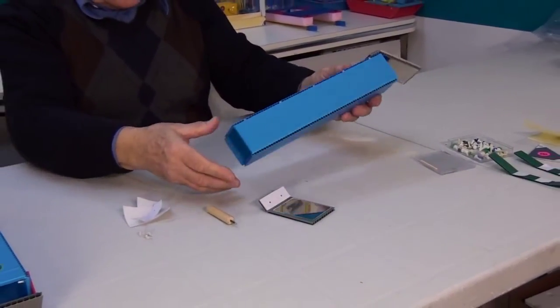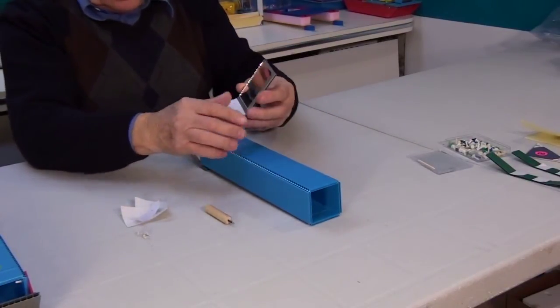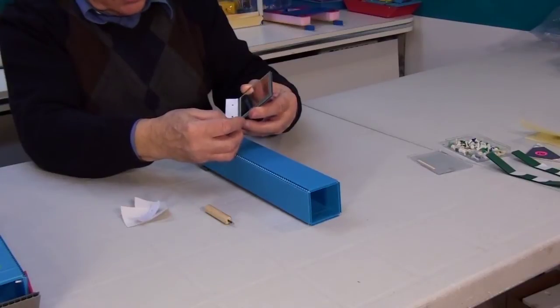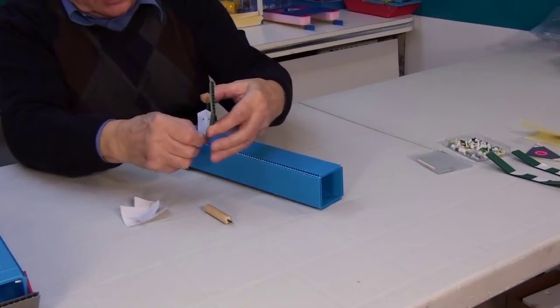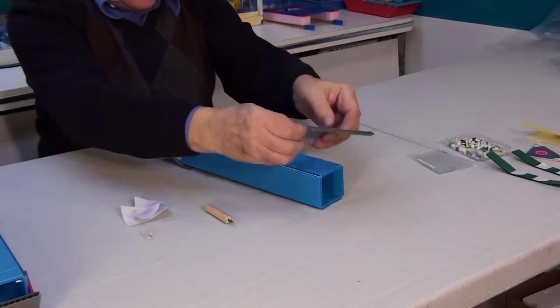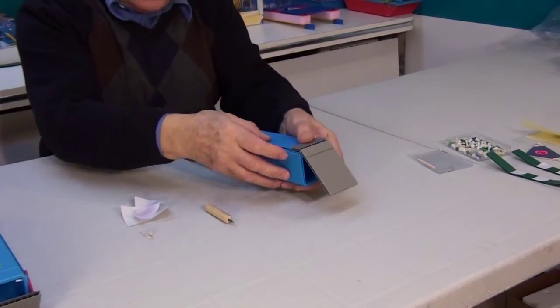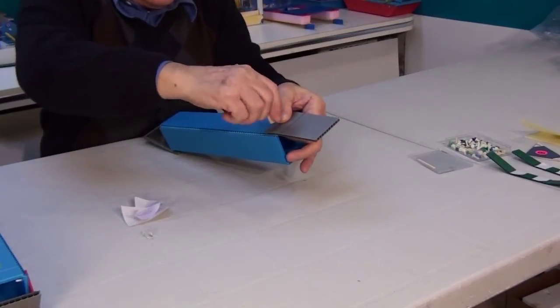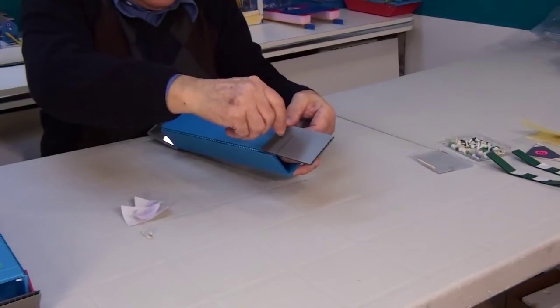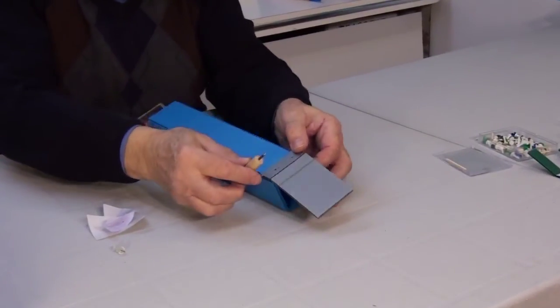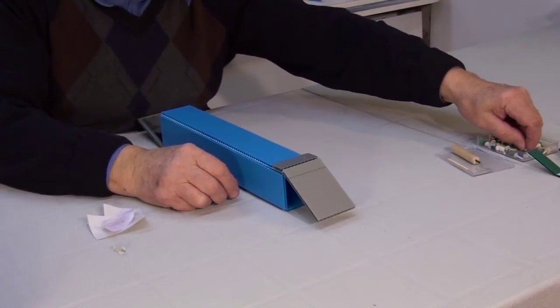Now we are going to put the second mirror on the opposite side of the tube. Repeat the same steps as for the first mirror. Remove the tape backing, stick the mirror to the tube, pierce two holes, and insert two clips.